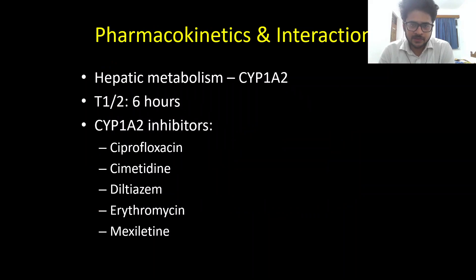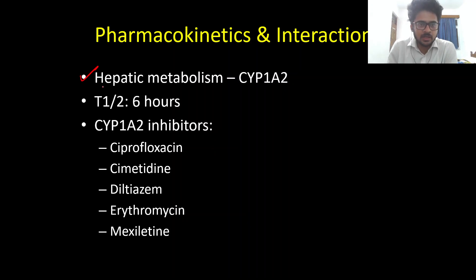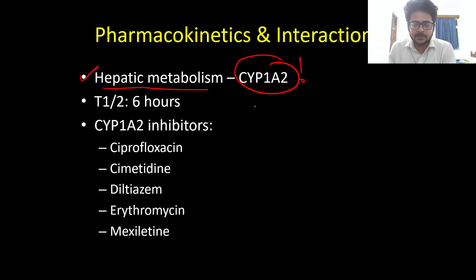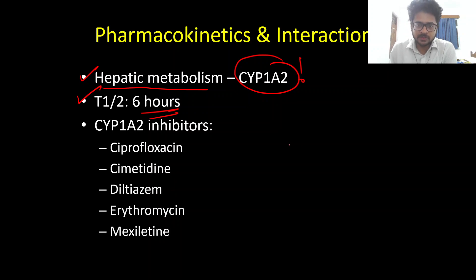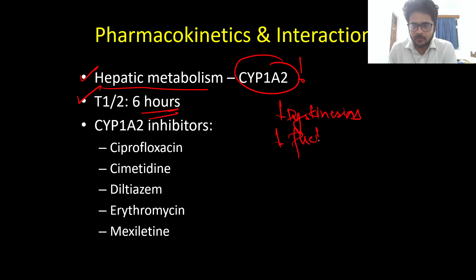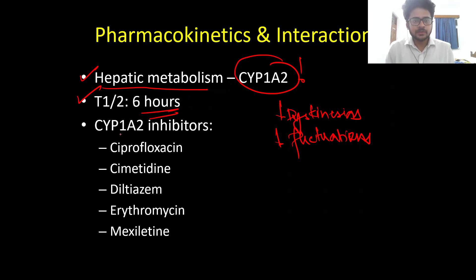Regarding pharmacokinetics: ropinirole does not have significant renal metabolism — it is primarily metabolized by the liver, with the important enzyme being cytochrome P450 1A2. The half-life is 6 hours, which is longer than levodopa, and it also acts on the dopamine receptor for a longer duration. Because of this long duration of action, there is less risk of dyskinesias and decreased risk of motor fluctuations compared to levodopa, which has a shorter duration of action.